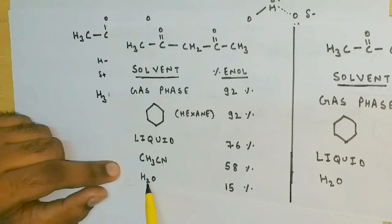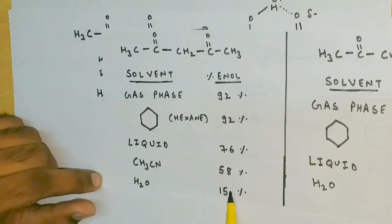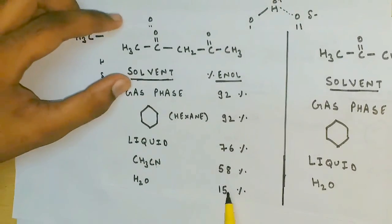For CH3CN, the amount slightly decreases because it's polar. And for water it is minimum because water has the highest amount of polarity. So this data justifies our theoretical explanations.